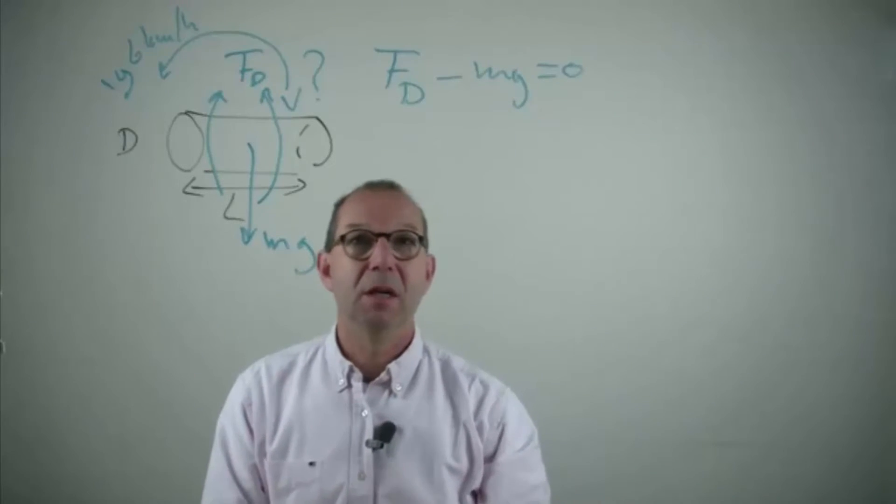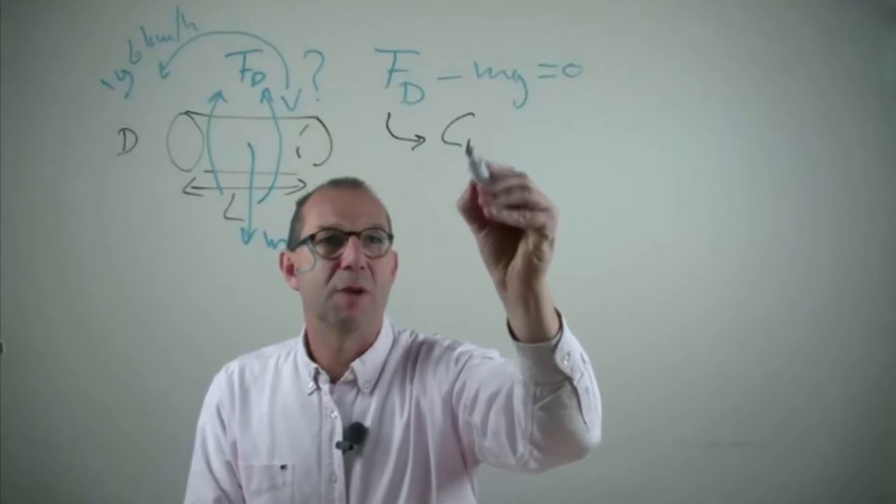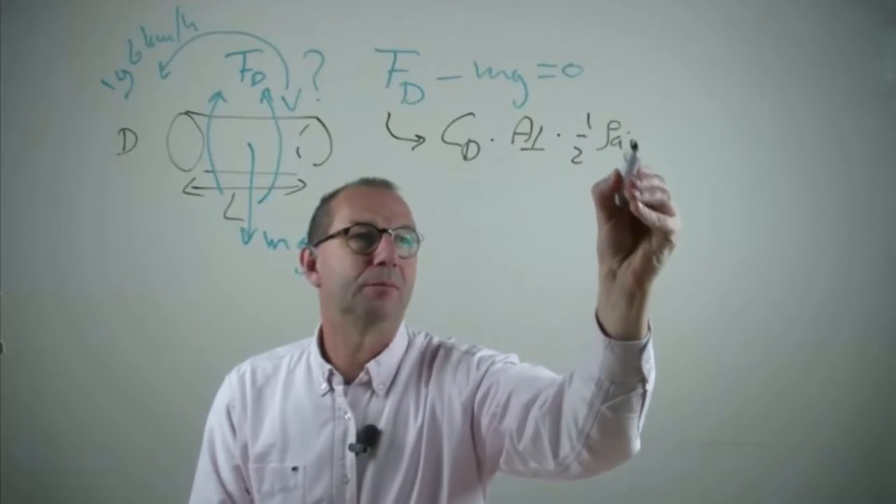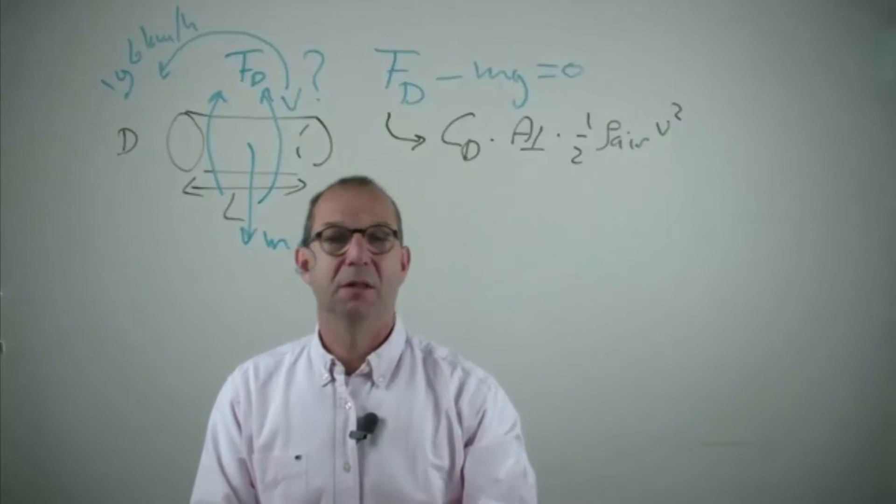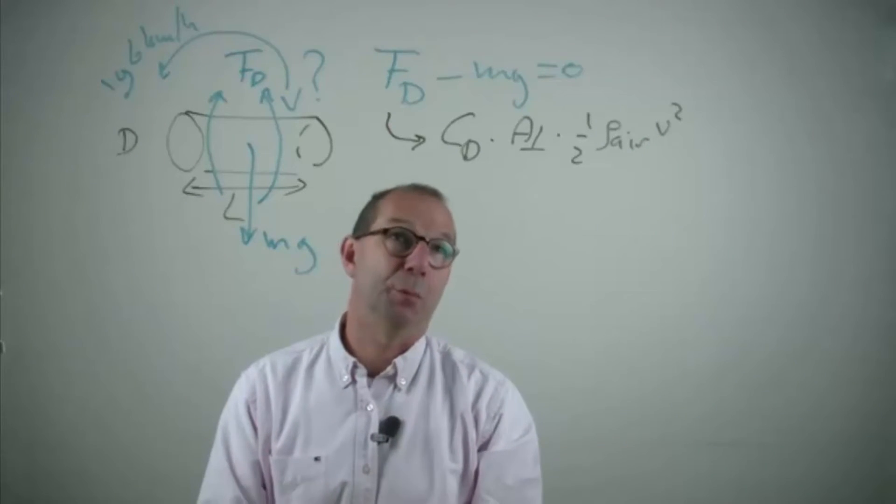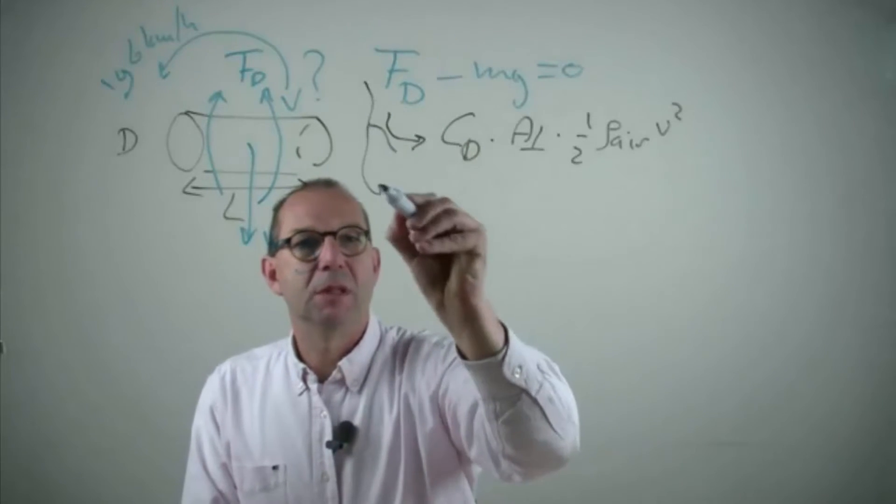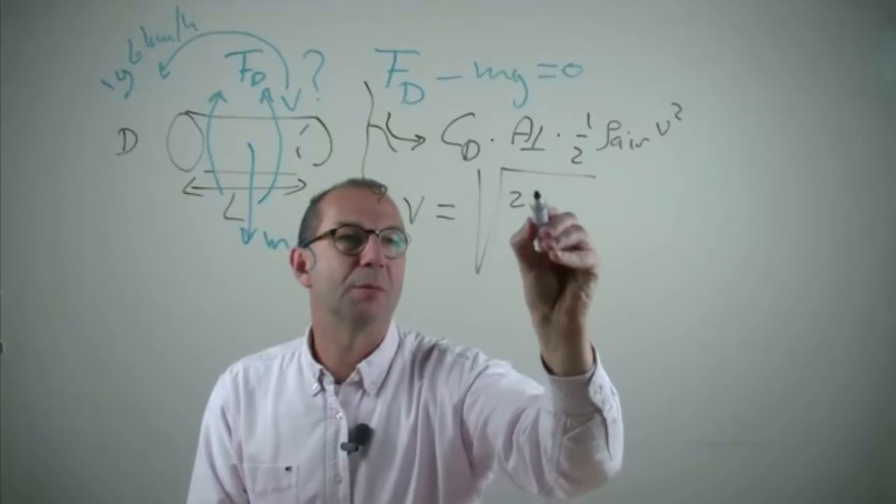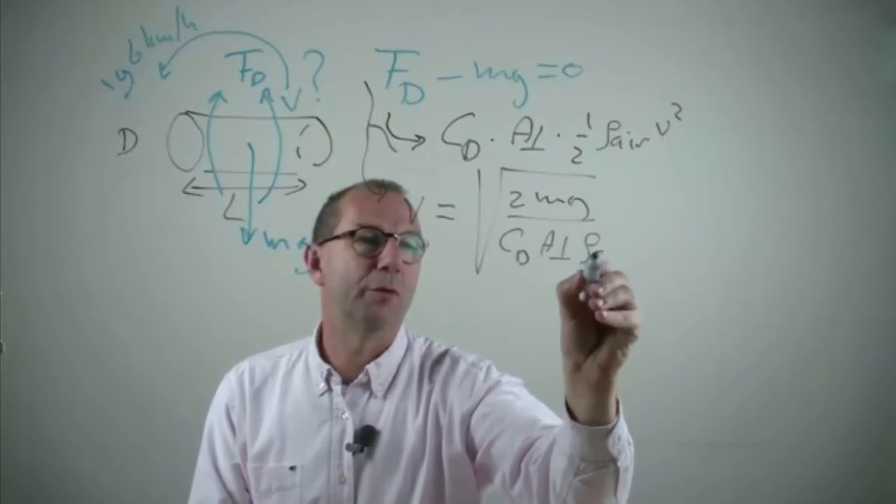How do we do that? Well we need to model the drag force and we know how to do that. It's a drag coefficient, it's a perpendicular area, times half rho air, v squared, v, the velocity of the air, the person itself is floating. If you use this, then we find that the velocity equals the square root out of 2 times mg over CD, a perpendicular rho of air.